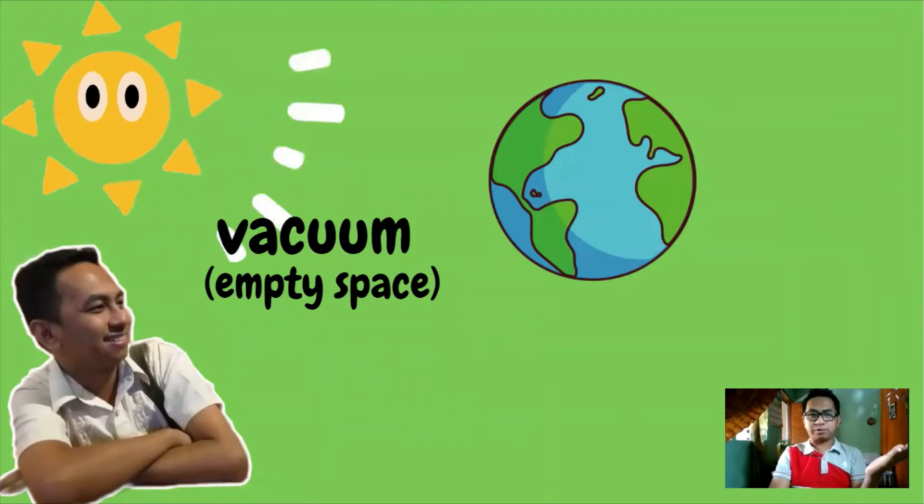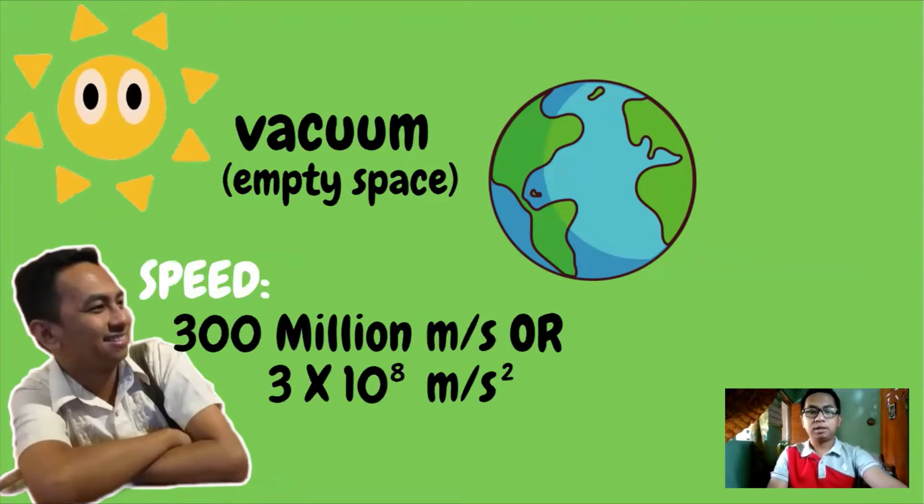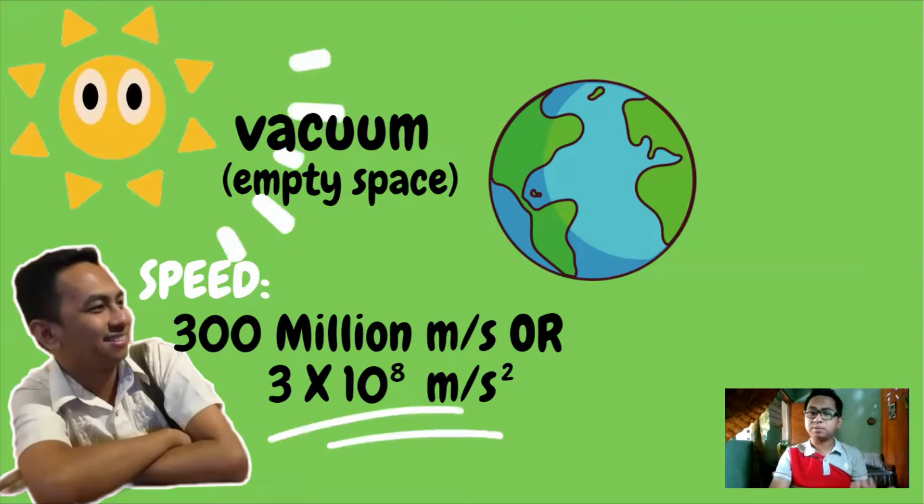As we observed, rays of the sun can travel to our planet Earth. Why? Because light can travel in a vacuum. Yes, you heard it right. But that vacuum is not the same that we are thinking of. Vacuum is an empty space where there is no presence of air, like outer space. It can travel to a vacuum at a constant speed of 300 million meters per second or 3 times 10 to the 8th power meters per second.